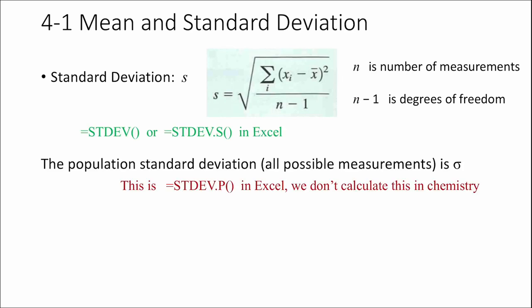You can do standard deviation in Excel, but be careful because there are two standard deviations. The one we use in experimental science is S — that is for the set of measurements you actually have. You can say STDEV.S, or just the regular standard deviation function. Now if you could take all possible measurements, you would get the population standard deviation, which we call sigma. You can do this in Excel with STDEV.P for population, but this isn't the case in experimental science because you can't take all possible measurements.